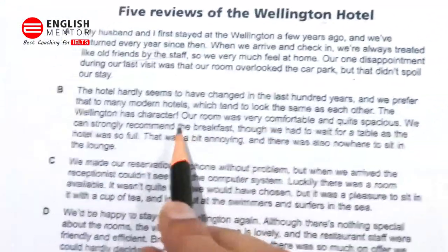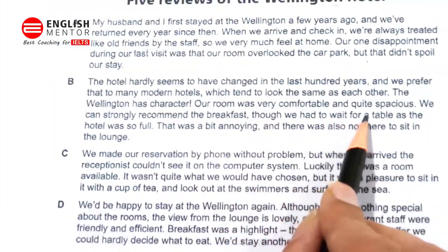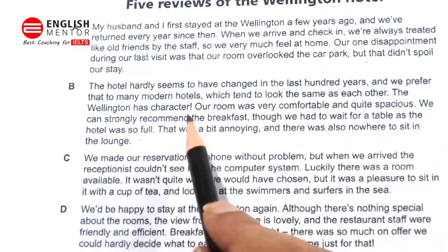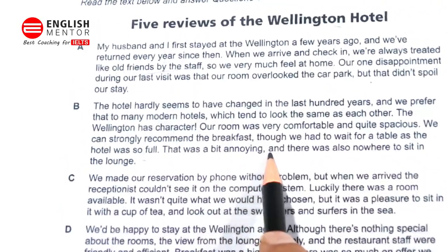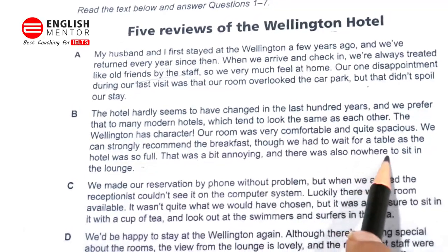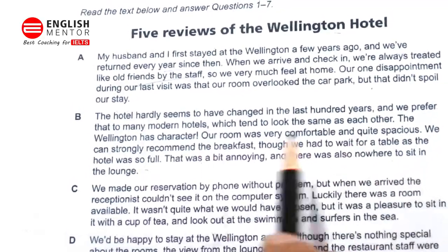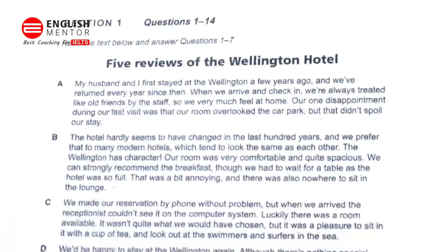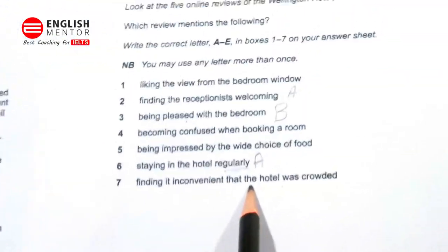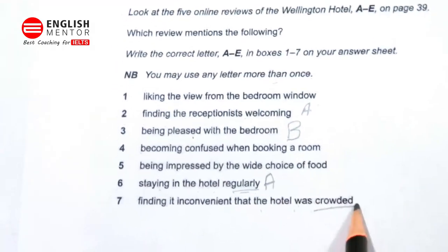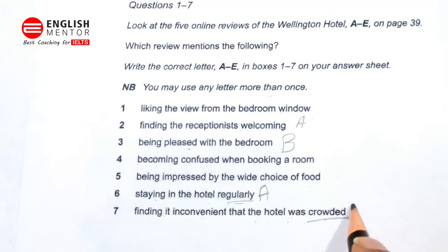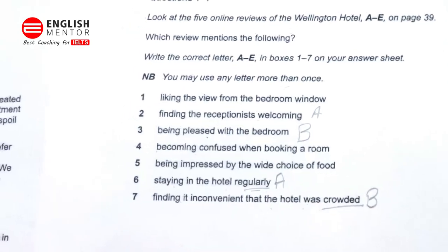'We can strongly recommend the breakfast, though we had to wait for a table as the hotel was so full — that was a bit annoying — and there was also nowhere to sit in the lounge.' So they are unhappy about the crowding. Going to option seven — finding it inconvenient that the hotel was crowded — the answer for option seven will be B.